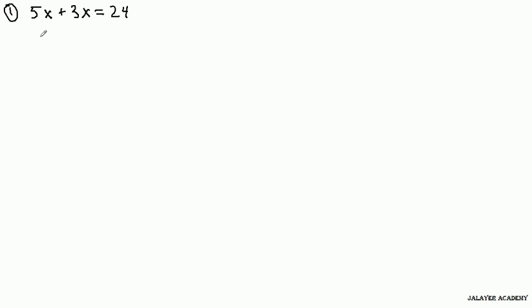5x plus 3x equals 24. Well, we haven't seen this before in the other videos, and it's not something that we don't know how to handle, it's just we have to combine things. So here 5x and 3x can be combined into 8x, and so we're left with 8x equals 24, and we know to divide by 8 on both sides gets rid of that 8, and x equals 3.